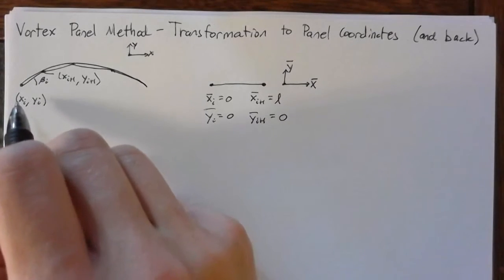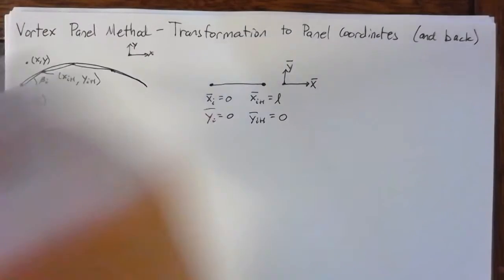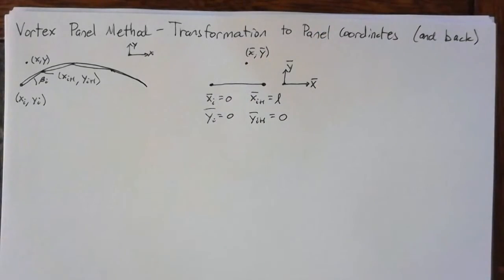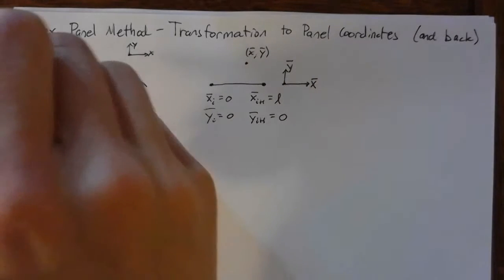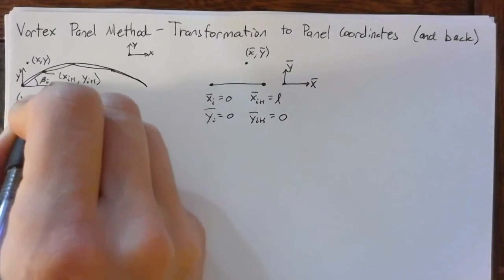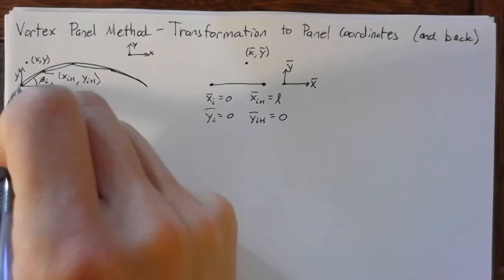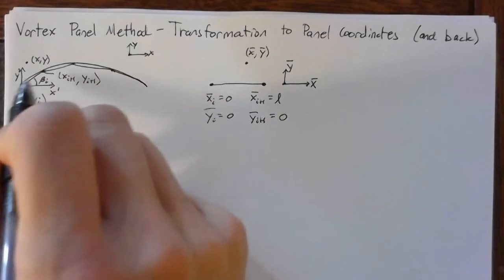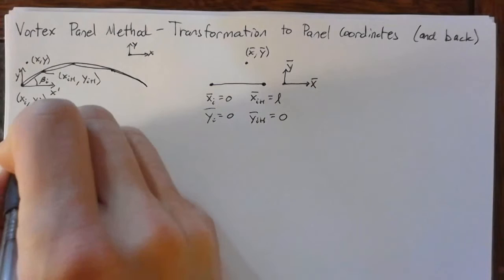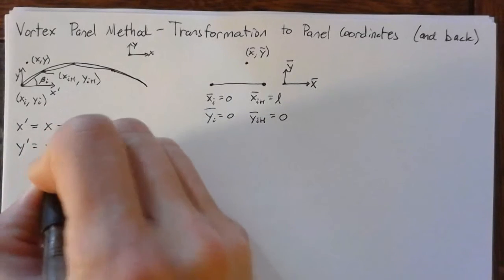I'm going to take an intermediate step in order to transform this arbitrary point, this arbitrary x and y, into x-bar and y-bar. That intermediate step is to define a prime axis. The prime axis is going to be in the same rotation as our x and y axes, but the origin is going to be placed at our first panel point. The transformation for this is a simple translation: x-prime equals x minus x sub i, and y-prime equals y minus y sub i.